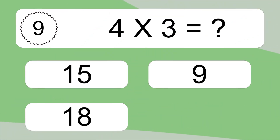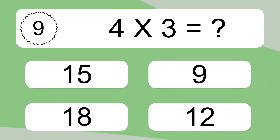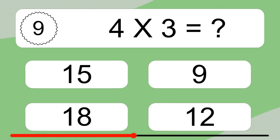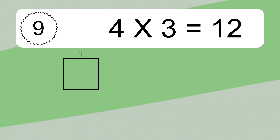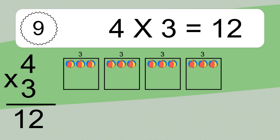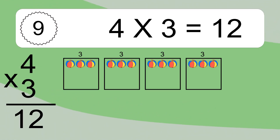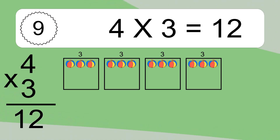4 times 3 equals what? 4 times 3 equals 12. We have 4 boxes, and each box has 3 colorful balls inside. If you count all the balls in all the boxes together, you will have 4 times 3 balls. This equals 12 balls.